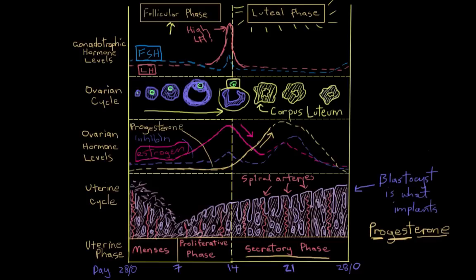And finally, progesterone actually reduces the contractility of the muscles of the uterus. Remember, the uterus has a lot of smooth muscle in its walls. So the progesterone actually reduces the contractility of those muscles so that the growing embryo doesn't really get too disturbed and doesn't get expelled out of the mother's body too early by those muscles contracting.